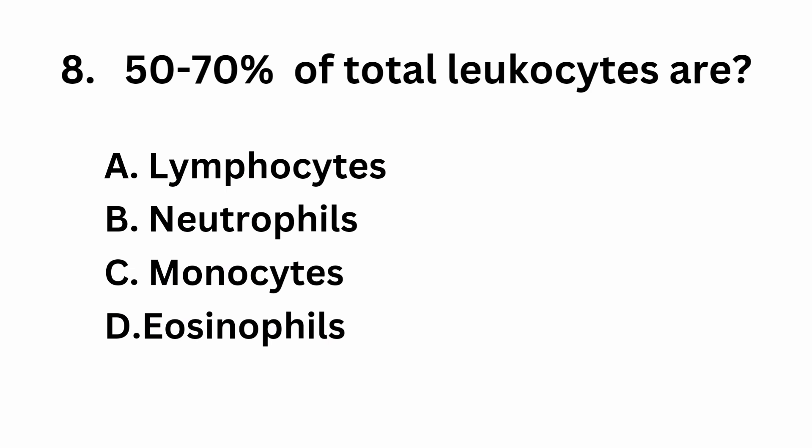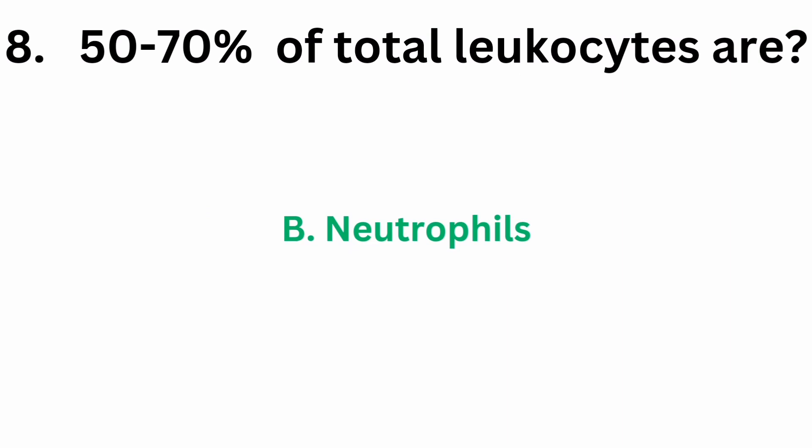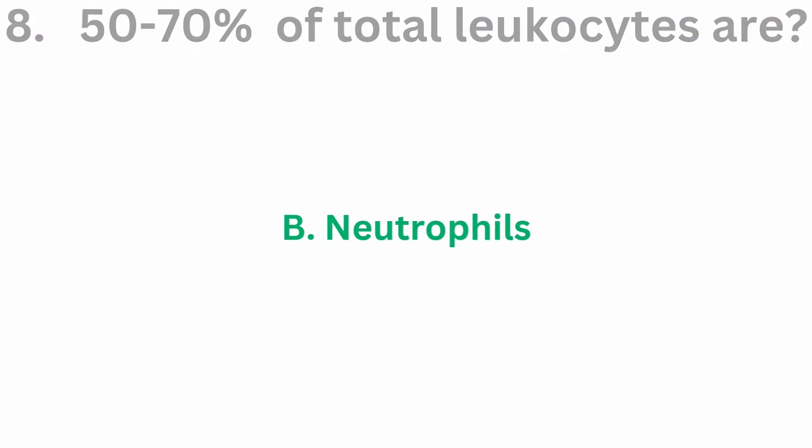Question number 8: 50 to 70 percentage of total leucocytes are. Option A, lymphocytes. Option B, neutrophils. Option C, monocytes. Option D, eosinophils. The correct answer is option B, neutrophils. These are the most abundant blood cells.